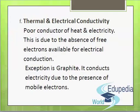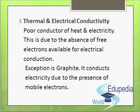The next property is thermal and electrical conductivity. Non-metals are poor conductors of heat and electricity. This is due to the absence of free electrons available for electrical conduction in non-metals. There is one exception: graphite conducts electricity. The electrical conductivity of graphite is due to the presence of mobile electrons.